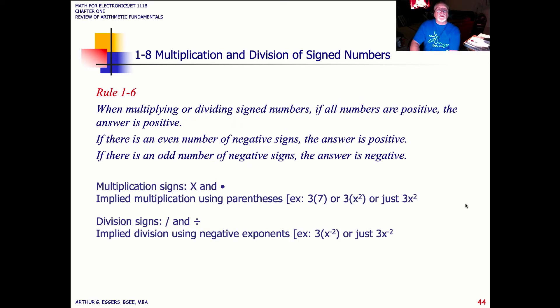Multiplying and dividing. Rule 6 says when you're doing multiplication or division of sign numbers, if all the numbers are positive, the answer is positive. If there's an even number of negatives, the answer is positive. If there's an odd number of negatives, the answer is negative. Refer back to that rule often.